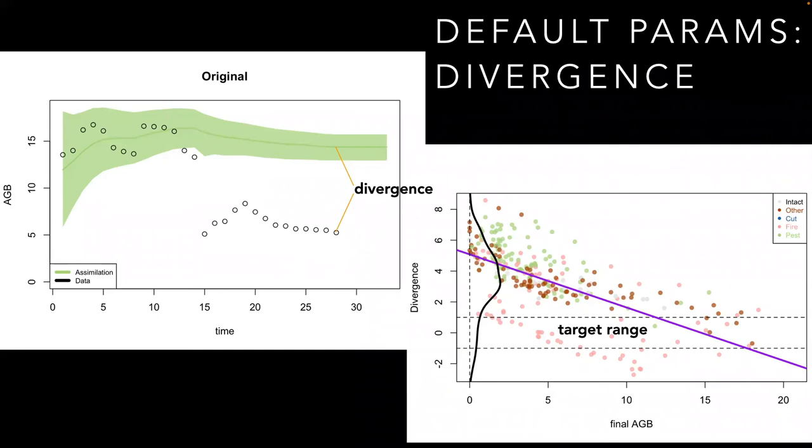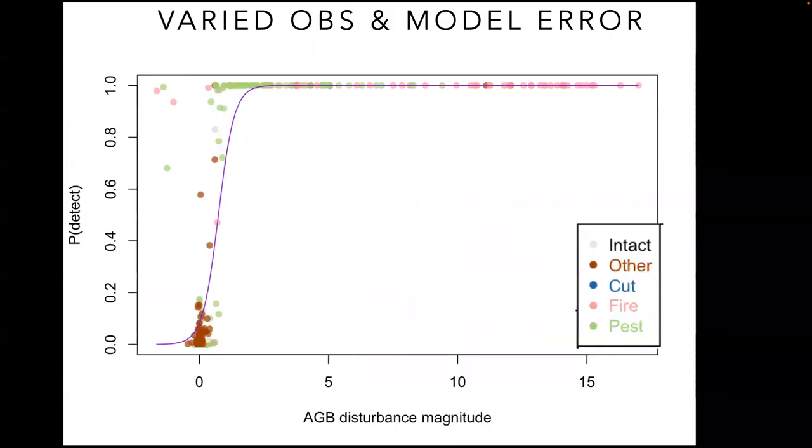That said, in the right-hand panel, we do see that the amount of divergence varies as a function of both disturbance type and magnitude, with fires being easier to detect. As a proof of concept, we ran a range of experiments where we varied the model and observation errors, after which our algorithm was highly successful at detecting disturbances that were bigger than around half a kilogram of carbon per meter squared. And algorithm performance did not vary significantly by disturbance type. It's also worth noting that we do not yet account for errors in the disturbance product itself, so we don't know for sure if some of these small or negative disturbances represent errors in the above-ground biomass product, errors in the disturbance product, or simply that the disturbance itself didn't have a large enough effect on AGB to be detected. Extending the real-world assimilation to multiple data constraints is an obvious future direction.